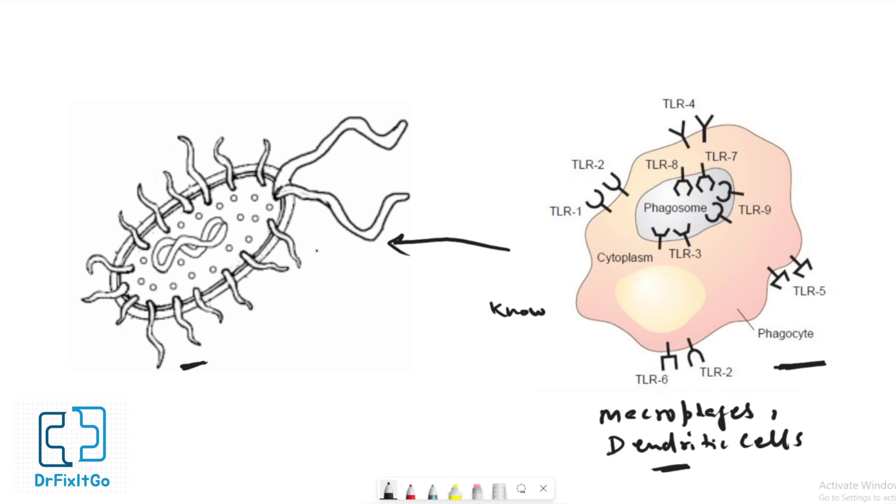This system of recognition is called pathogen-associated molecular pattern, or PAMP, and includes small molecular sequences in such structures as the lipopolysaccharide LPS layer of gram-negative cell walls.